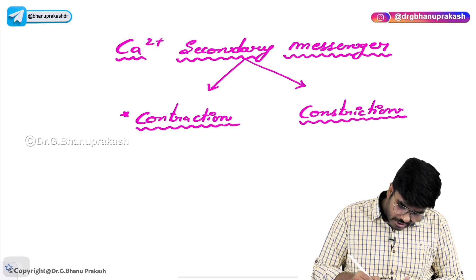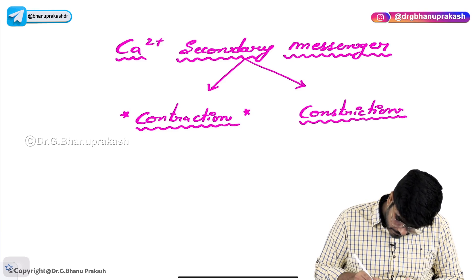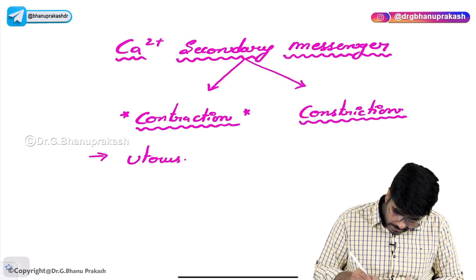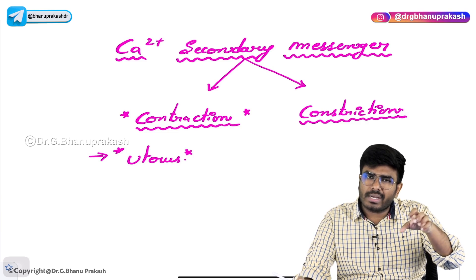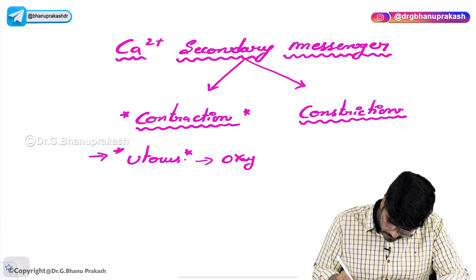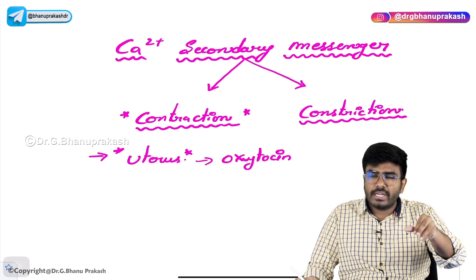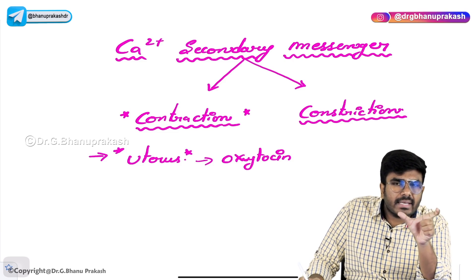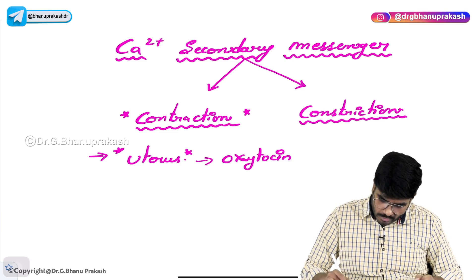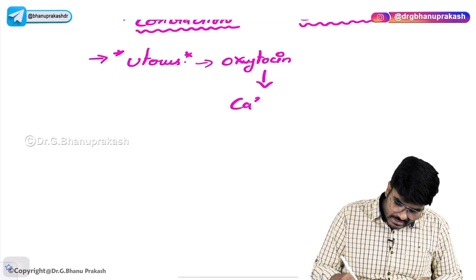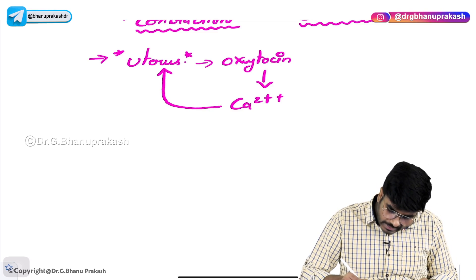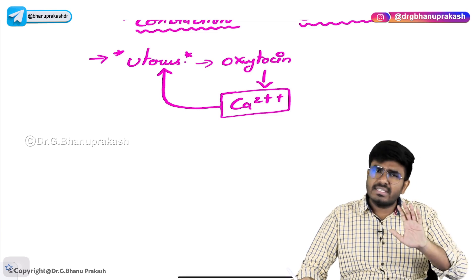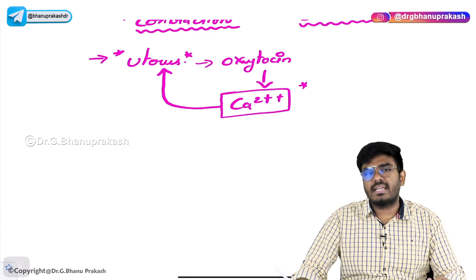First, what is this contraction? Which contraction? Contraction of uterus — uterine contraction. Think by yourself: what is the hormone which causes contraction of uterus? Oxytocin. Oxytocin causes uterine contractions. What is the secondary messenger involved in contractions? Calcium. So oxytocin uses calcium for uterine contractions. The secondary messenger used by oxytocin is calcium — not cAMP, not cGMP. It's calcium which is used as a secondary messenger by oxytocin.